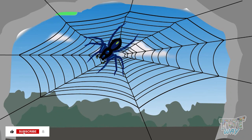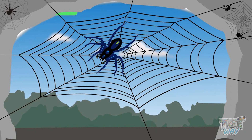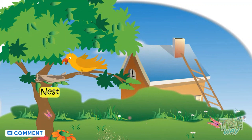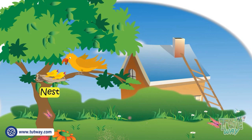Different types of spiders spin different webs. Birds make different types of nests. They use their nests to lay eggs and to bring up their baby birds.